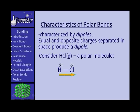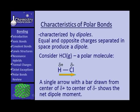And we indicate this by drawing an arrow in the direction from positive to negative charge. And if we can draw a single arrow to reflect this, draw a single arrow with a bar from the center of the positive to the center of the negative, that shows what we call a net dipole moment. You will understand net dipole moment better if you've ever studied vectors.